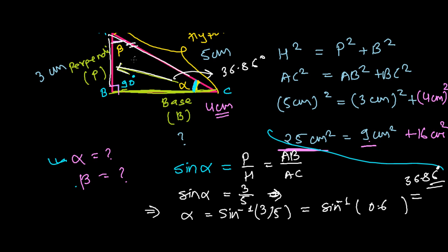This is 90 degrees, so total sum is 180 degrees. 90 is here, so the sum of beta and alpha should be 90 degrees. Simply you can subtract 90 minus 36.86.